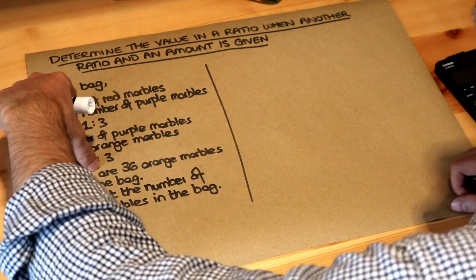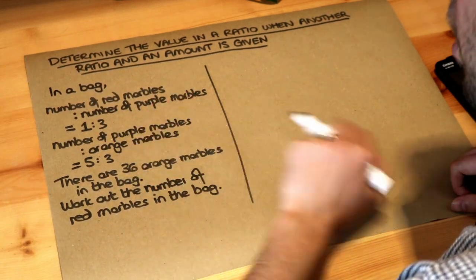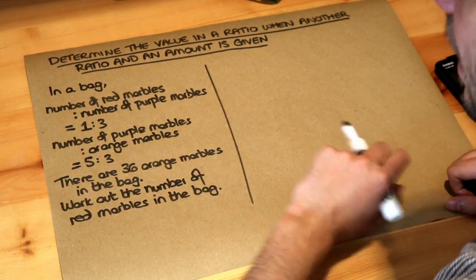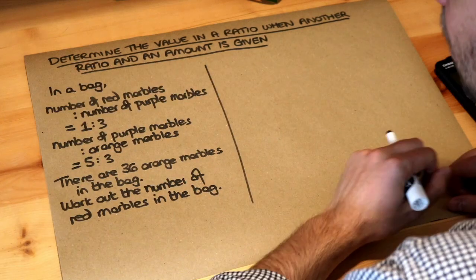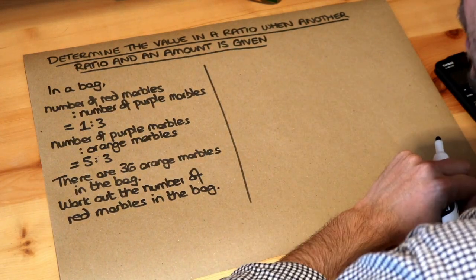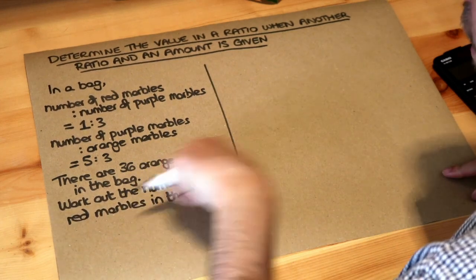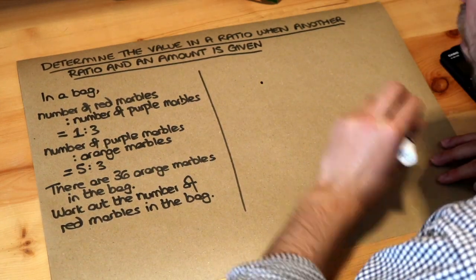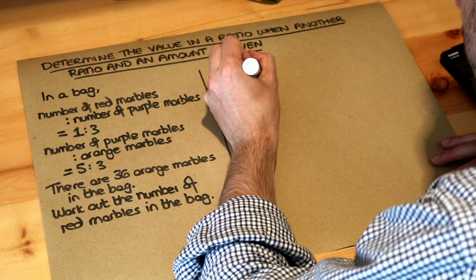Now we've got two different ratios here which both involve purple marbles. So we might think the strategy here is to first combine these into a single ratio because that single ratio will be easier to deal with to work out the answer to the rest of the question. So let's do what we would usually do to combine these ratios into one.